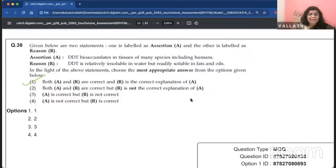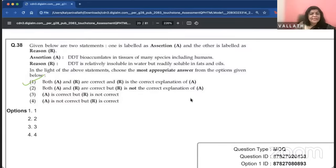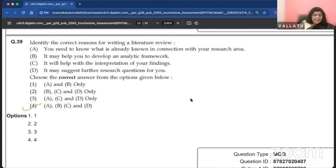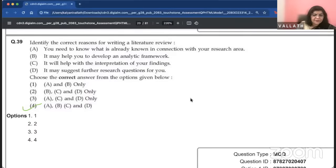Which of the following contextual factors determine meaning in communication behavior? A, B, C. Meaning is determined by physical location, by participants, and by preceding events. Such questions are easy only if you think of an example like the classroom. DDT bioaccumulates in tissues in many species, including humans. That's very common knowledge. DDT is relatively insoluble in water but readily soluble in fats and oils. That is why it enters the system. Easy question.